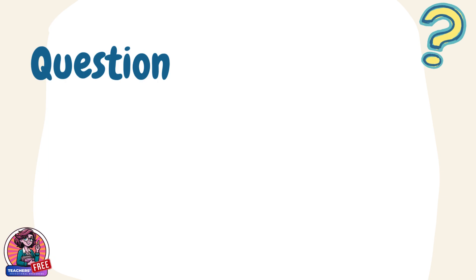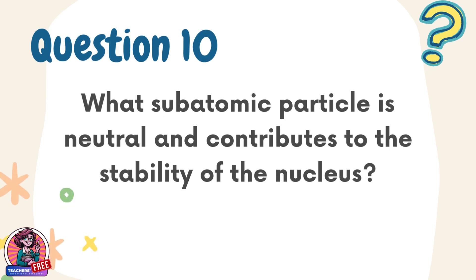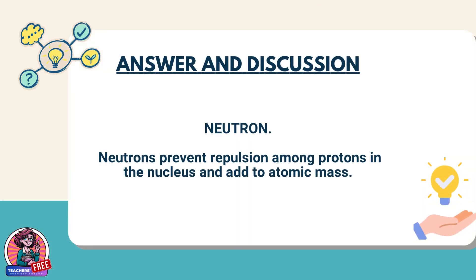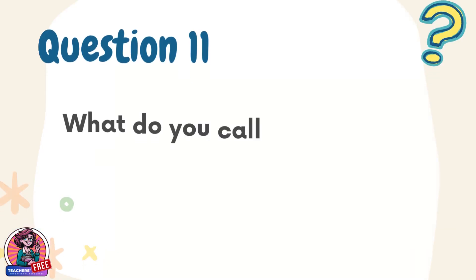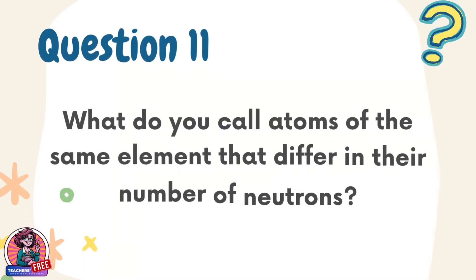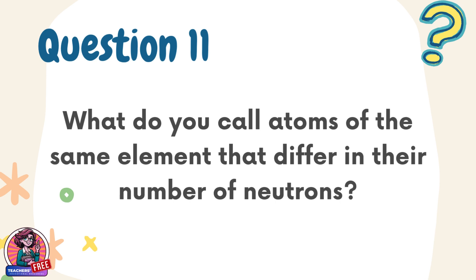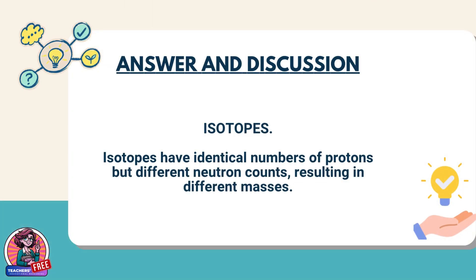Question 10. What subatomic particle is neutral and contributes to the stability of the nucleus? Answer: Neutron. Neutrons prevent repulsion among protons in the nucleus and add to atomic mass. Question 11. What do you call atoms of the same element that differ in their number of neutrons? Answer: Isotopes. Isotopes have identical numbers of protons but different neutron counts, resulting in different masses.